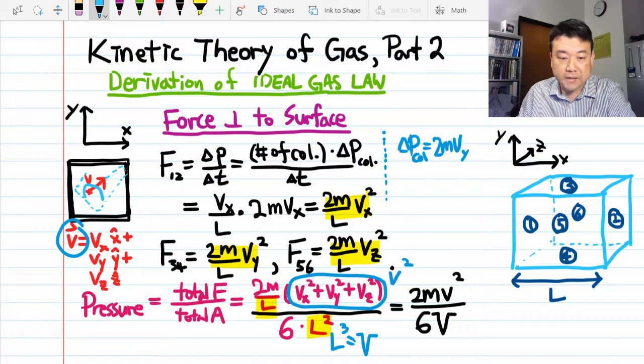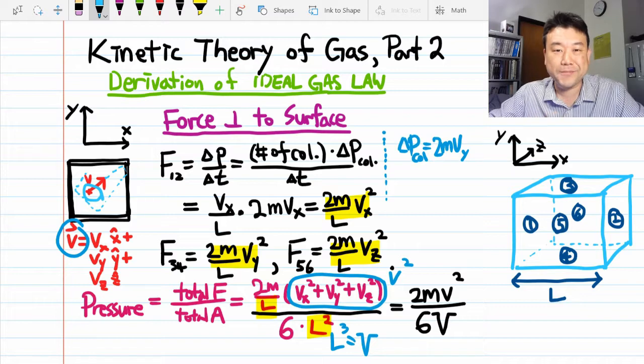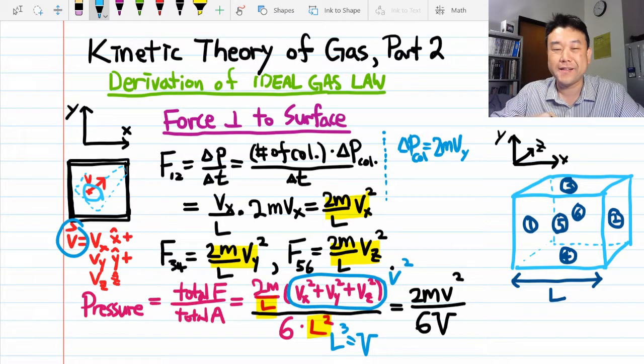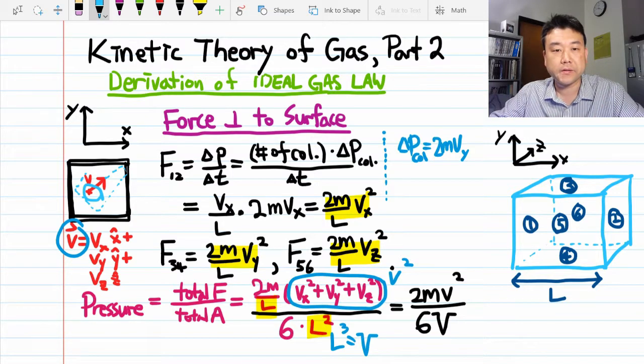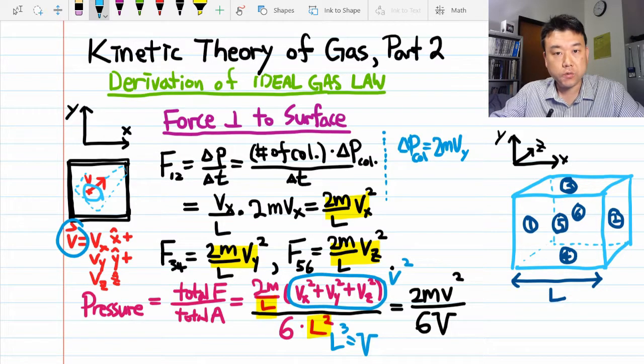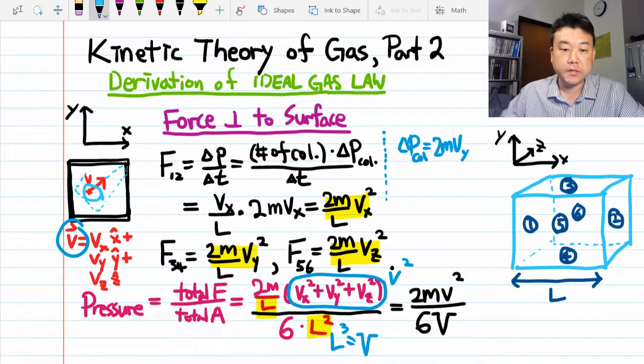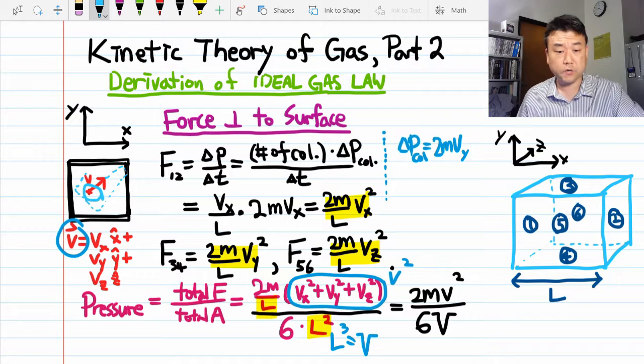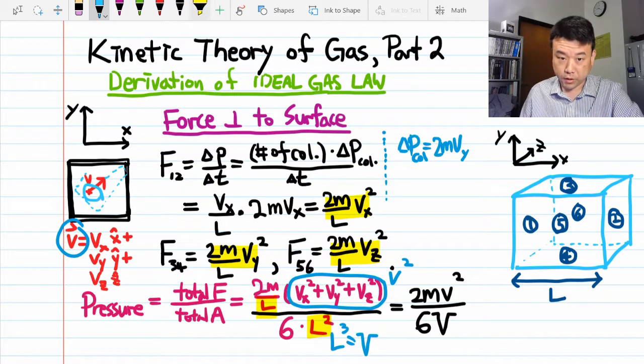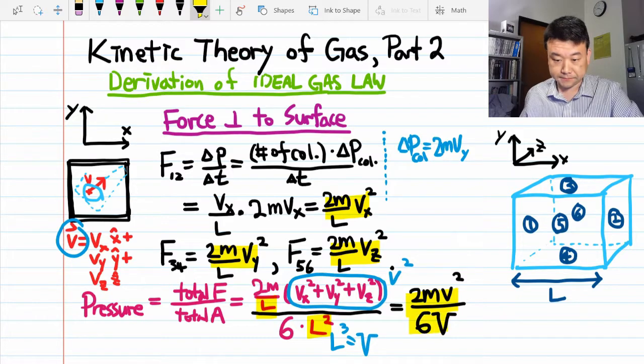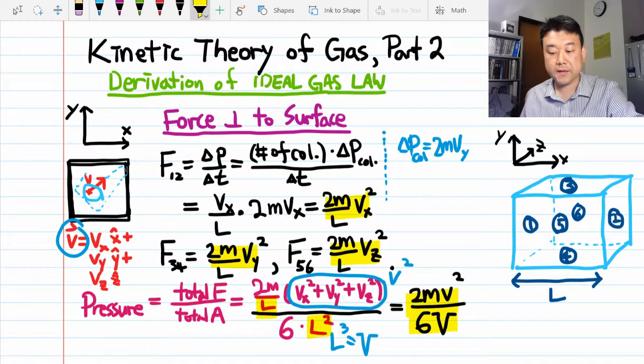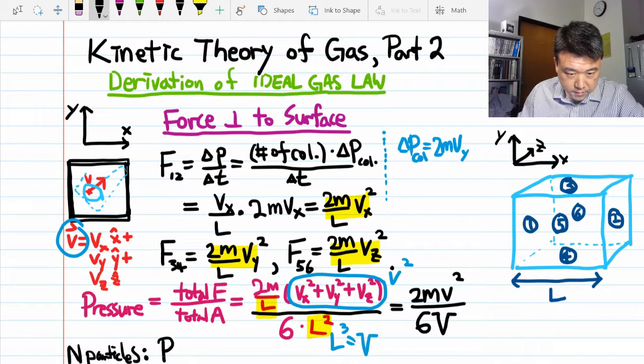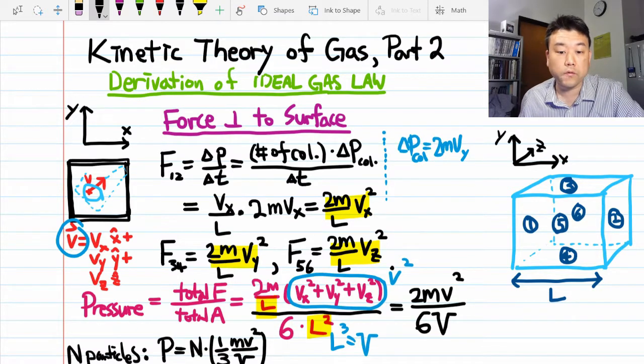So this is for a single gas particle. Now, in usual sample of gas, there is more than a single gas particle. There is usually a large number of gas particles. So if we have N number of gas particles, the pressure will simply scale. The forces add, so there will be N times the amount of force. So the pressure will be N times what we currently have on the right-hand side. For a sample of gas containing N particles, pressure is N times one-third mv squared over volume.